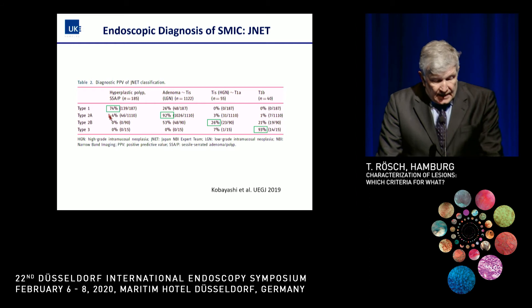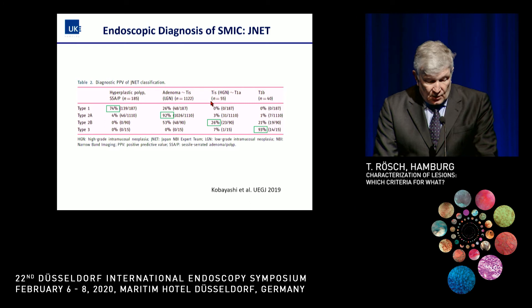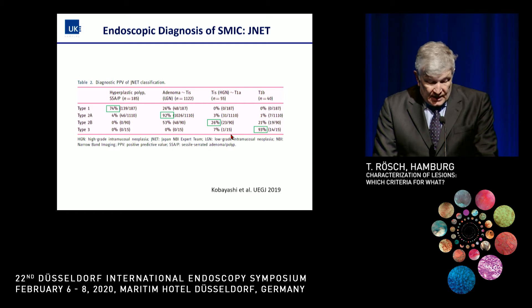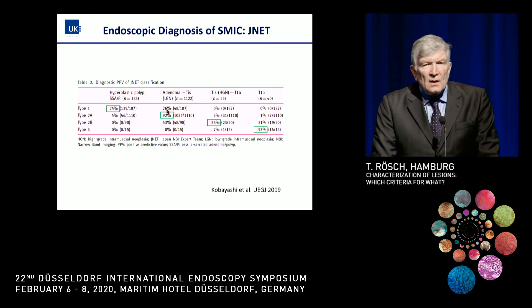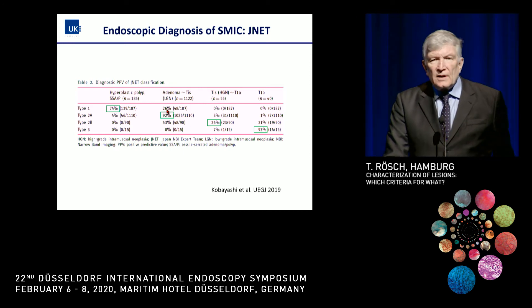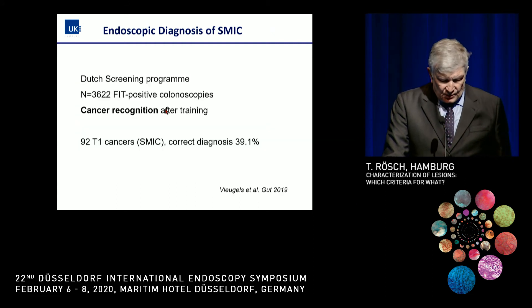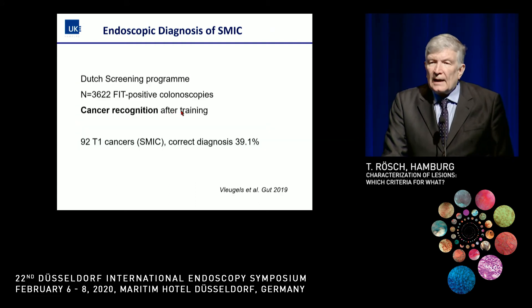Here you see the correlations between groups: type 1 is hyperplastic, then adenoma, high-grade, and SMIC — not very many cases overall, and the correlation is so-so. So even in a carefully selected imaging study with super experts, it's not that good.